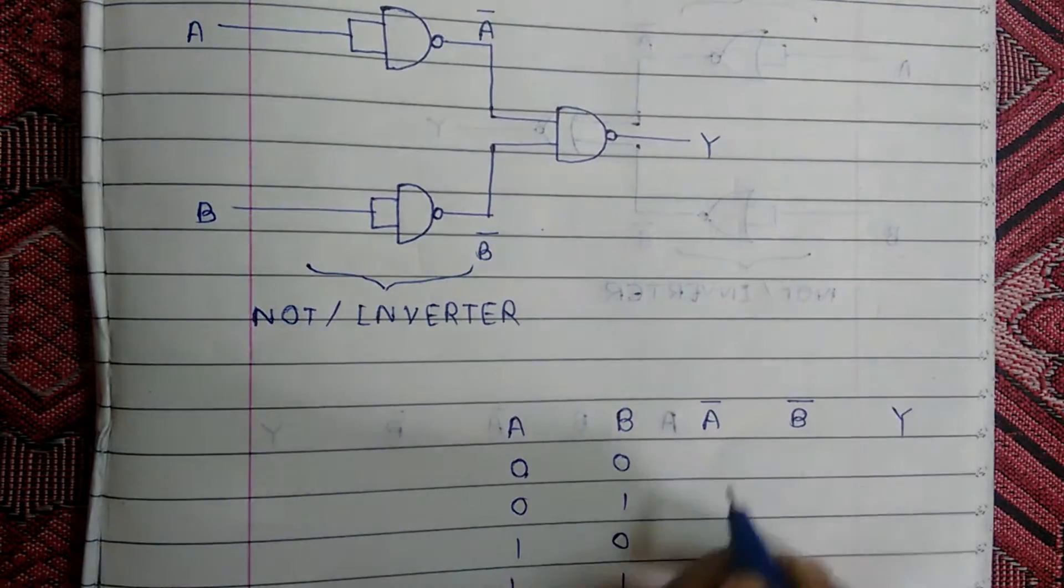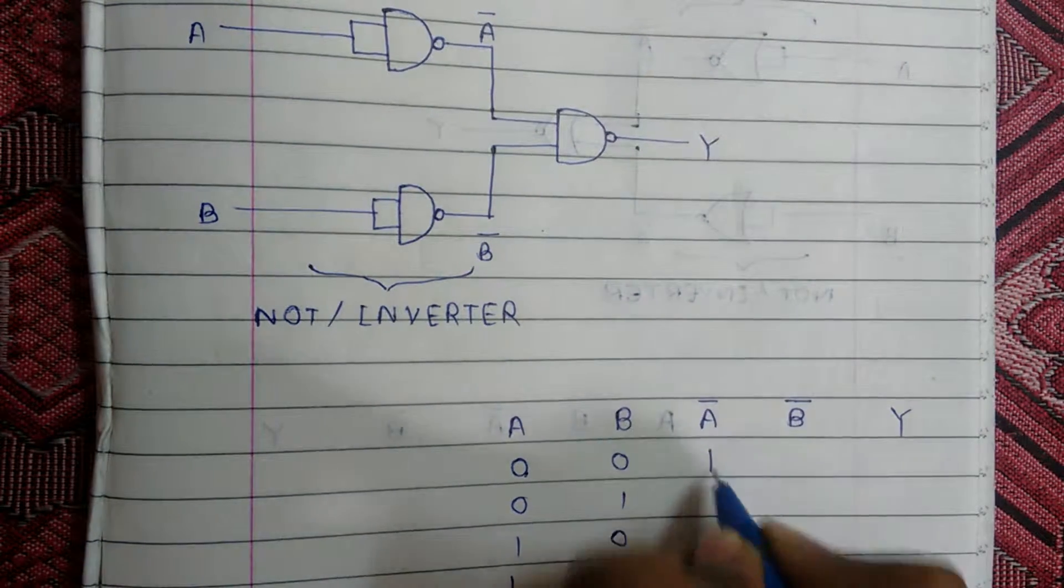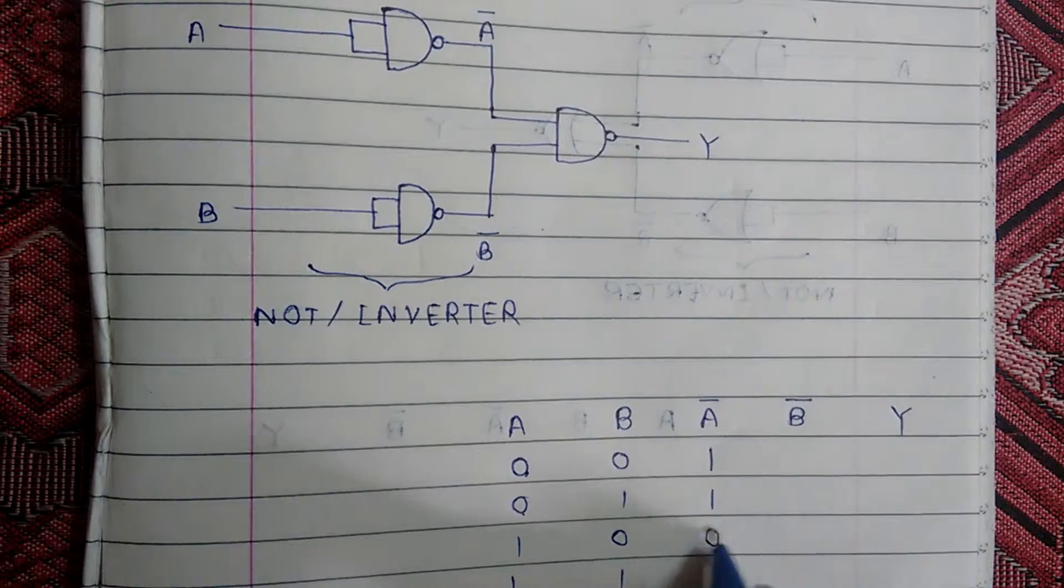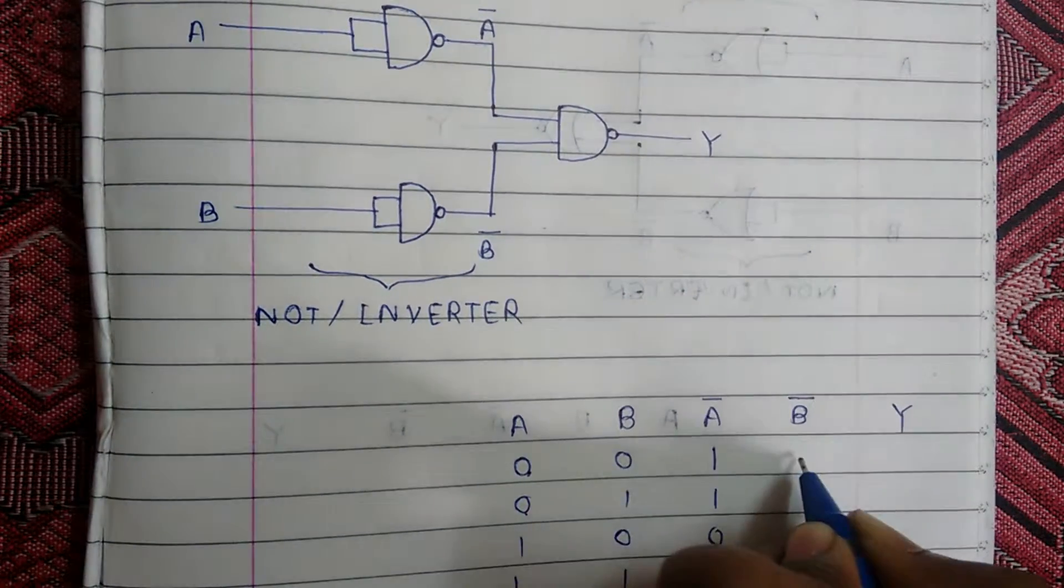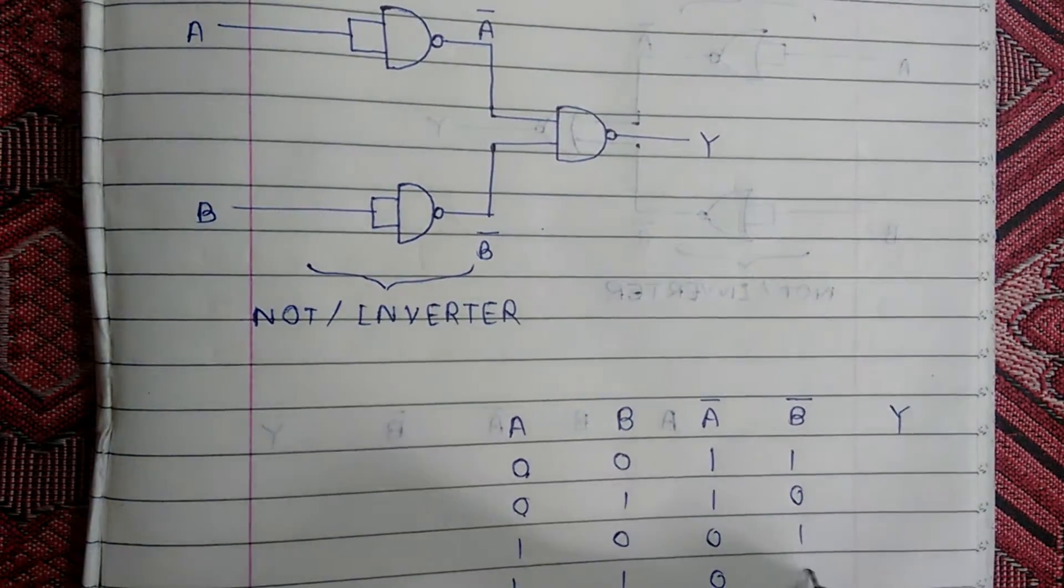So if A equals 0, then A bar is 1. If A equals 1, then A bar is 0.